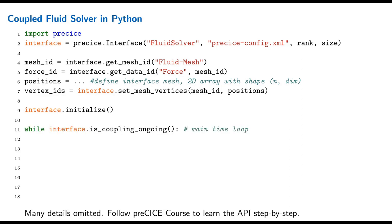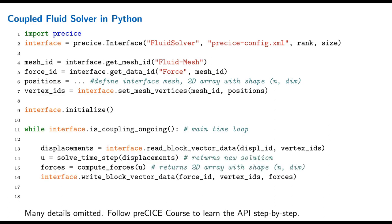We call initialize, in which preCICE sets up all its internal mesh and data structures. Then we enter the time loop, which is steered by is_coupling_ongoing to ensure a synchronized end across all coupled solvers. Within the time loop, we first read values from preCICE — here displacements, read in block using the vertex IDs we got earlier. Then we solve one time step of the code we want to couple, giving displacements as input as a boundary condition.